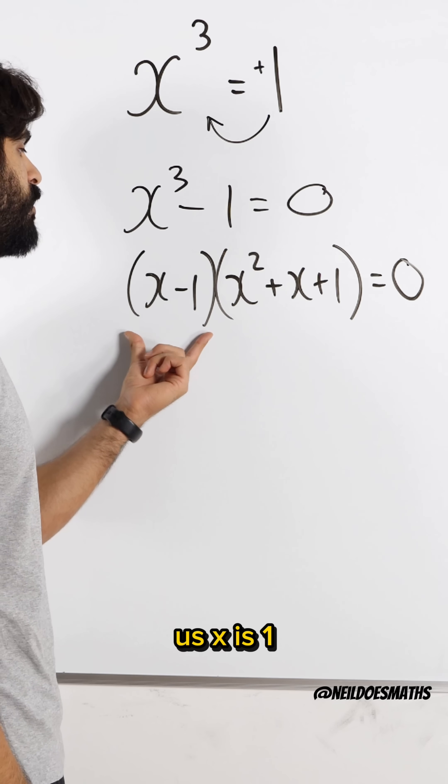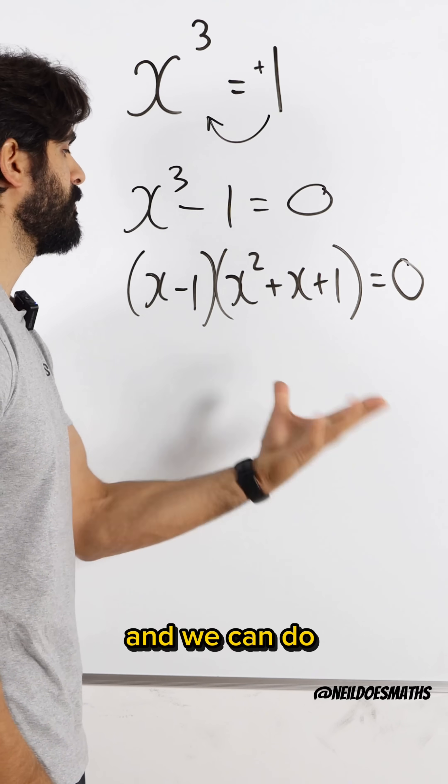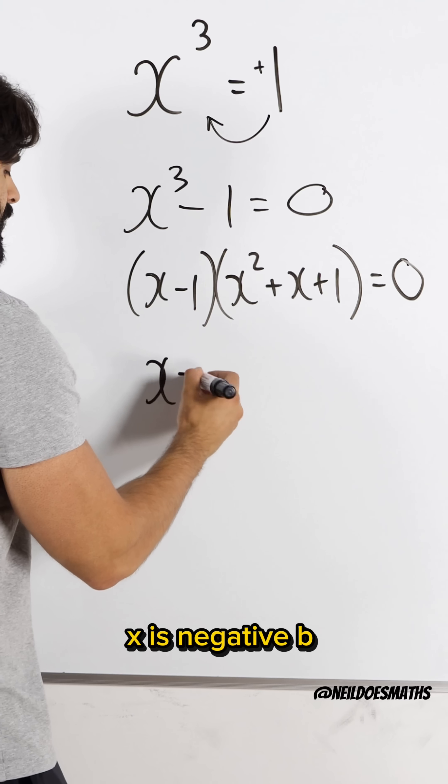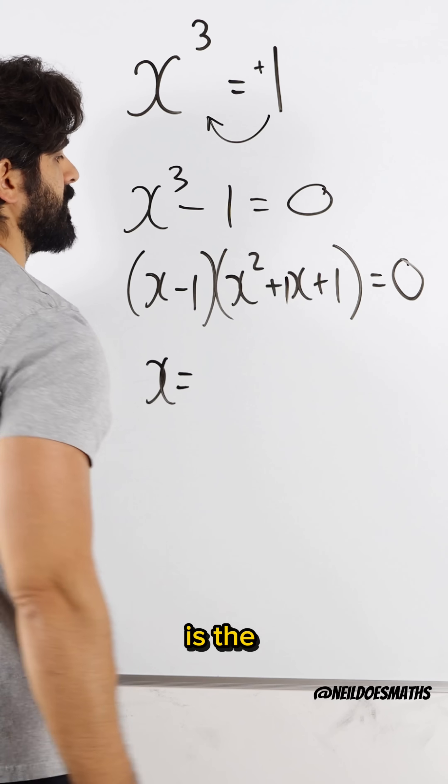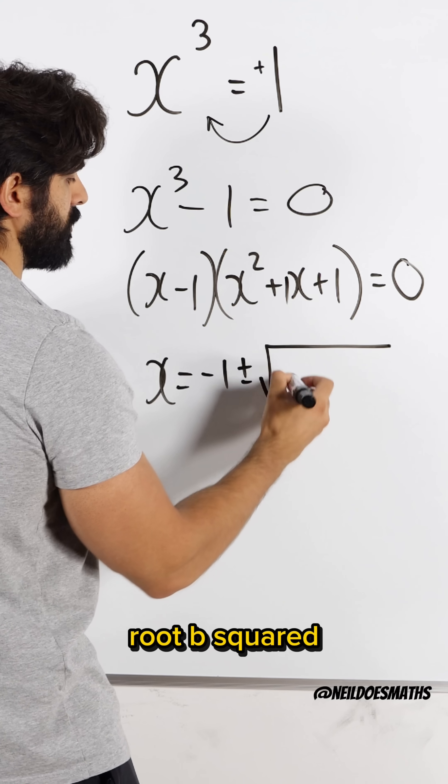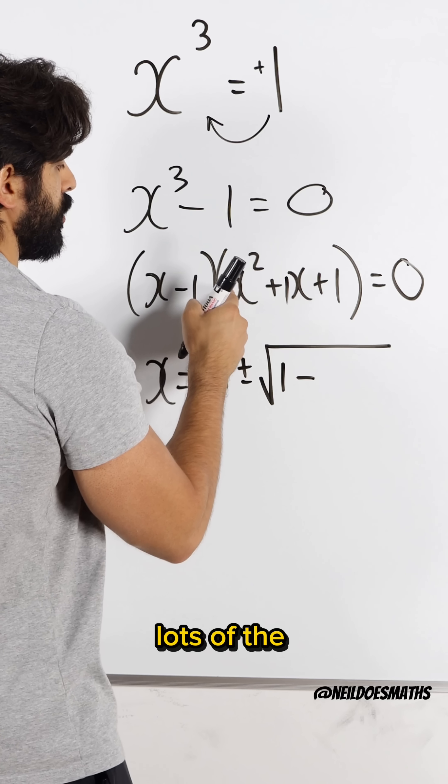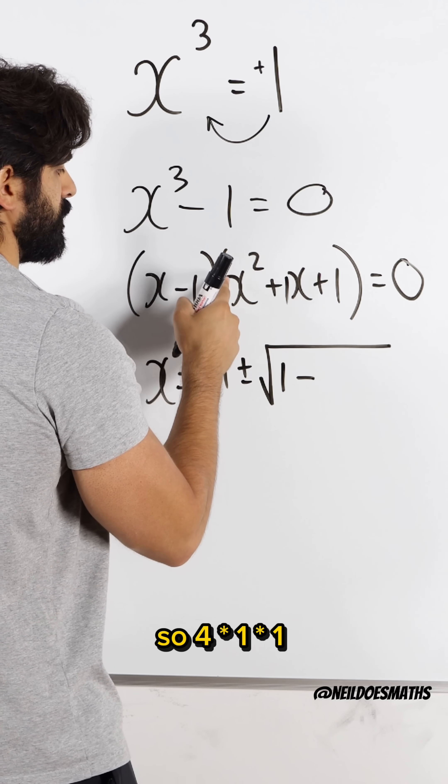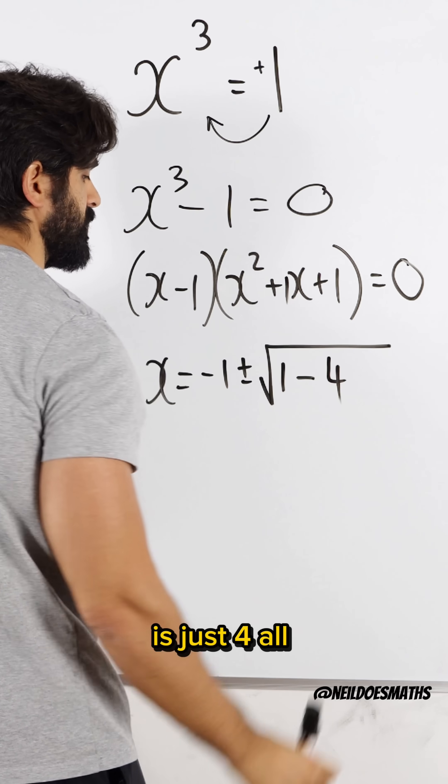So our cubic factorizes like this. We know this gives us x is 1, we just need to solve this one. And we can do that using the quadratic formula. x is negative b, so the b term is the coefficient of x, so minus 1 plus or minus root b squared. 1 squared is 1, minus 4, times the coefficient of this, which is 1. So 4 times 1 times 1 is just 4.